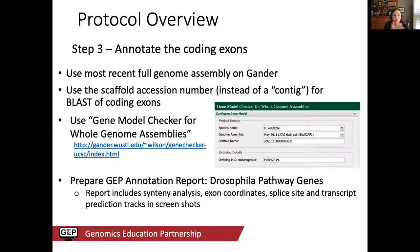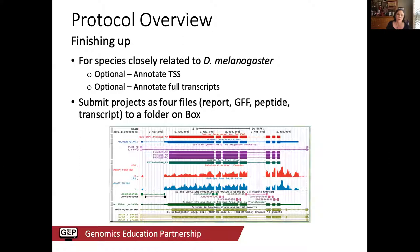We annotate genes more or less the same way as any GEP project, with a different gene model checker because the underlying data differs from the classical F-element project checker — it's all linked from the GEP website. Ultimately you prepare a report and submit it to the Pathways Box folder. As optional add-ons, you can annotate TSS regions or full transcripts, though this is currently only robustly supported for species closely related to melanogaster. Submission consists of four files: the report, GFF, peptide, and transcript files.